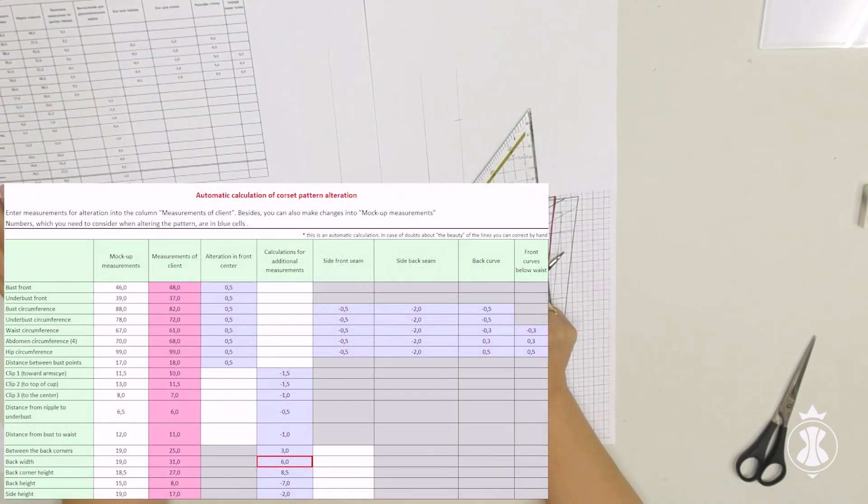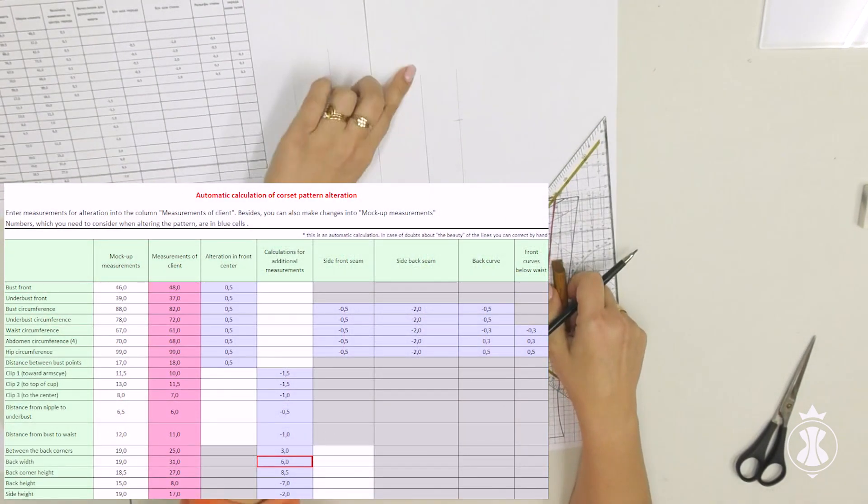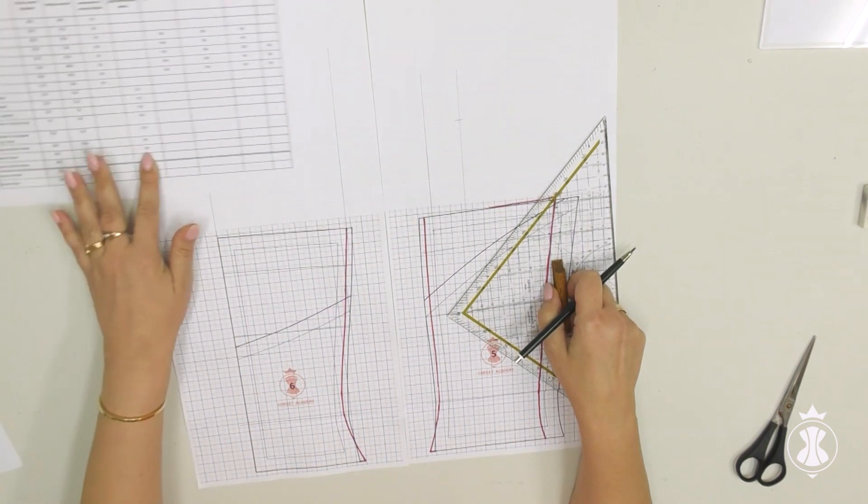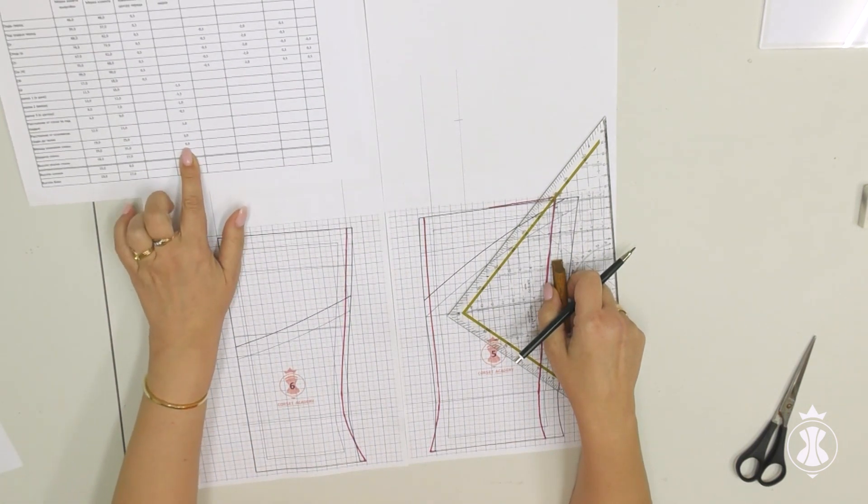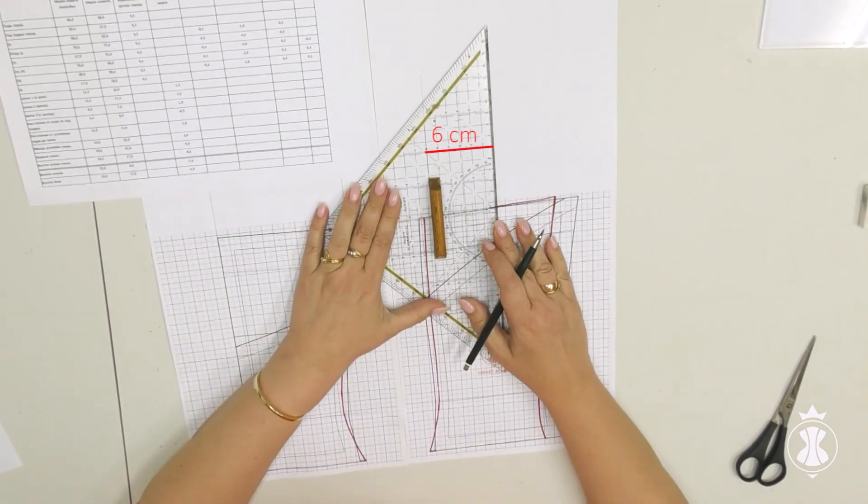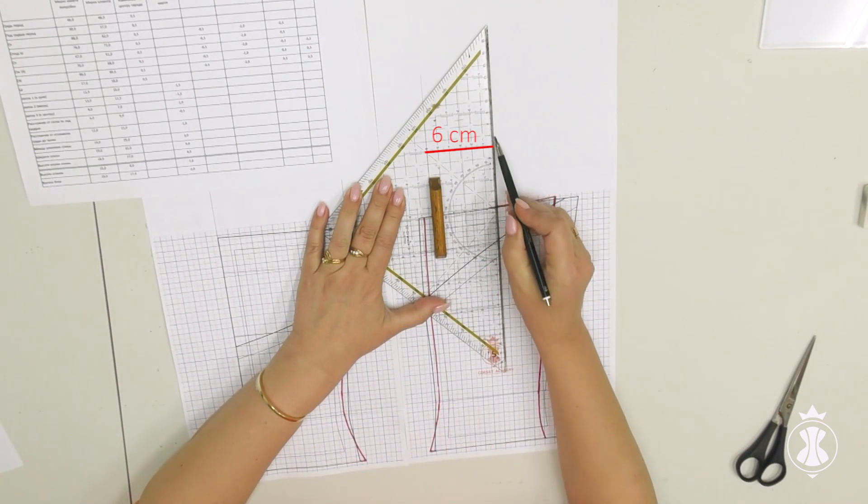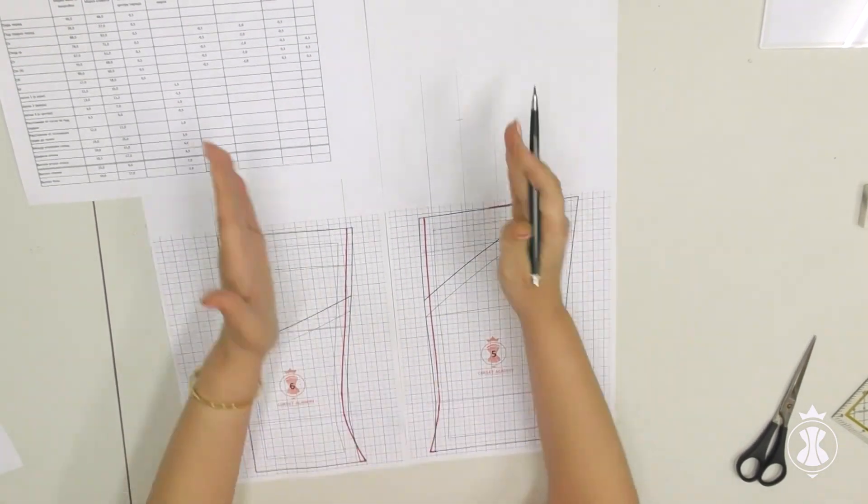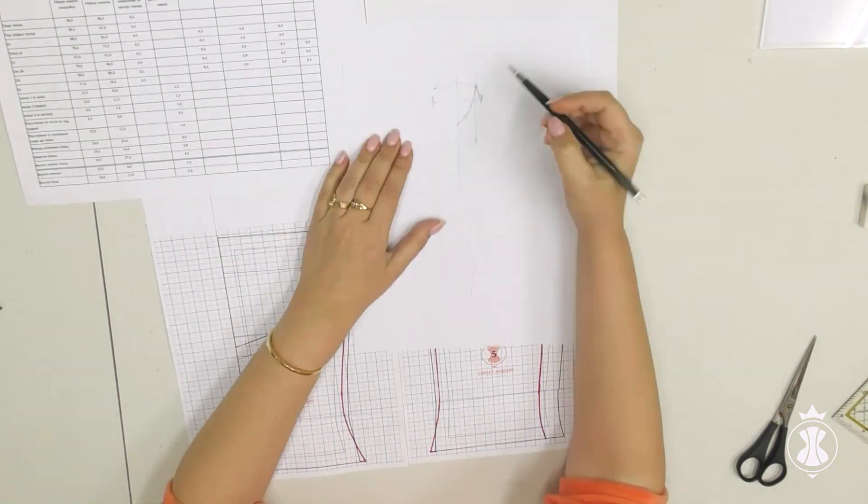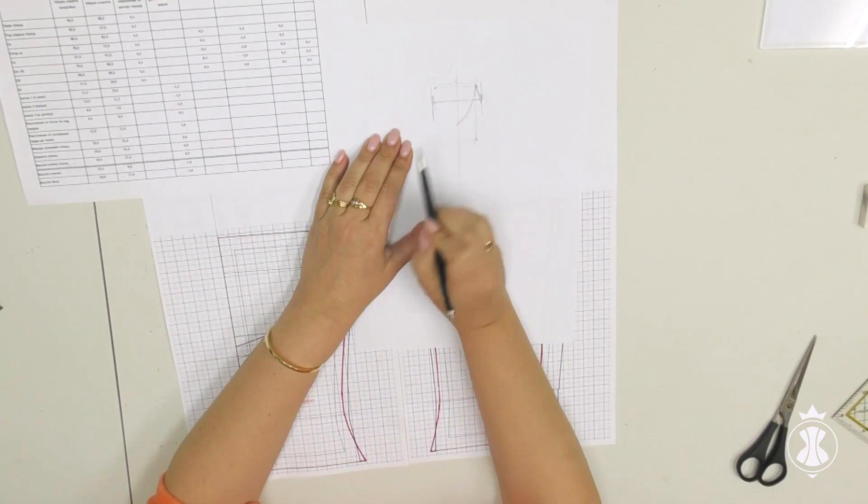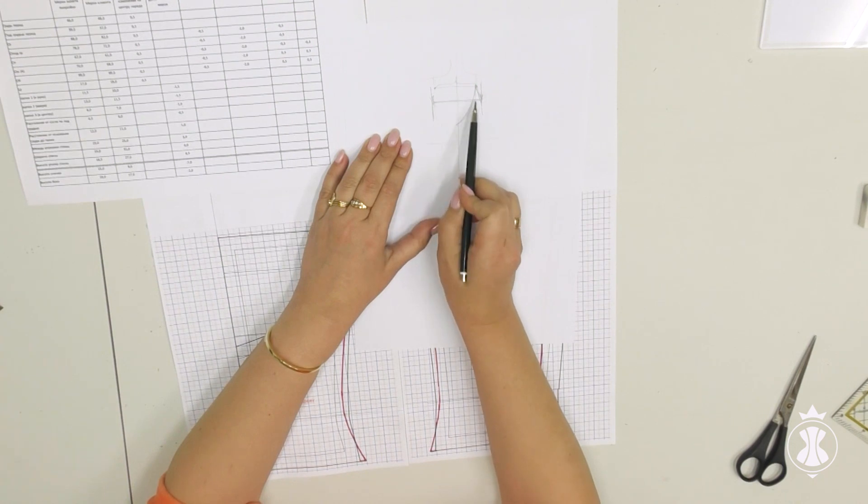Now, we need to consider the alteration in back width. I measure 6 cm as indicated in the table from line 3 toward the side. I draw line 5 which limits the back. This line is the border line of the armpit area. It is exactly from this line where we take the measurement back width.